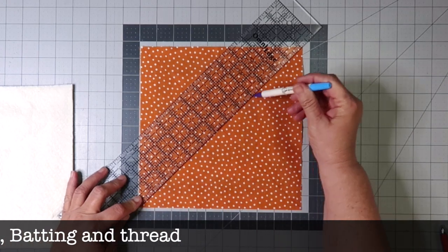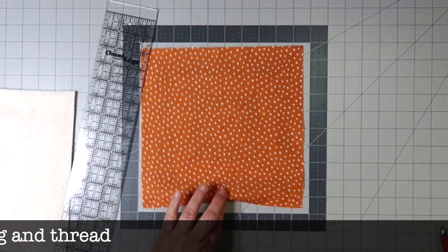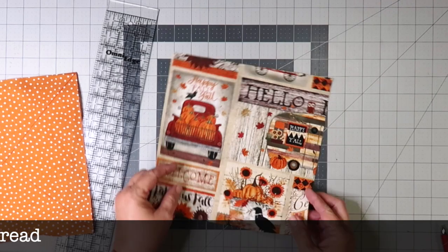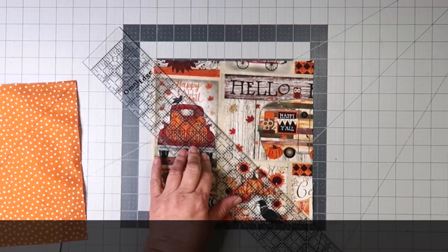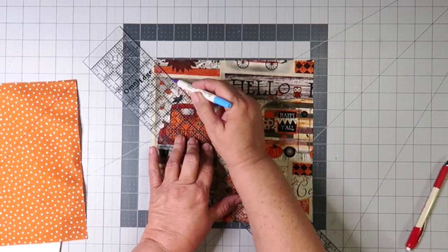I begin by cutting my fabric and batting at nine and a half inches. Now I draw a line from corner to corner to form an X and that's going to be our sewing line.